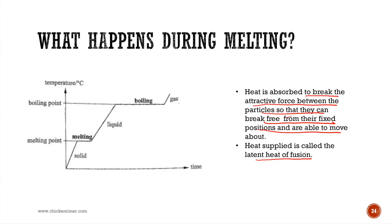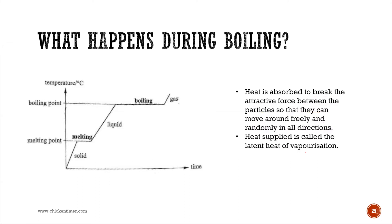For pure physics, you would calculate how much energy is required to melt a substance, but for combined science there's no such calculation needed. What happens during boiling is that heat is absorbed to break the attractive forces between particles so they can move about freely and in all random directions. The heat supplied here is called the latent heat of vaporization.